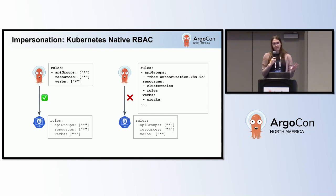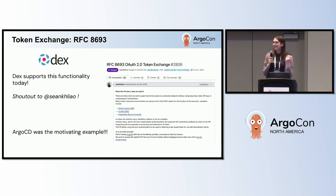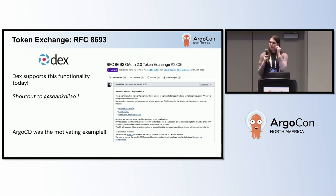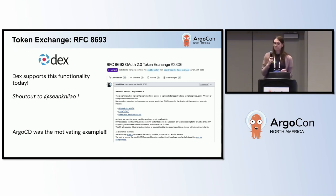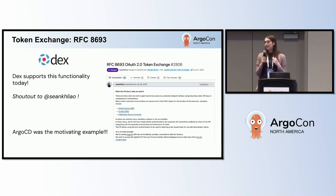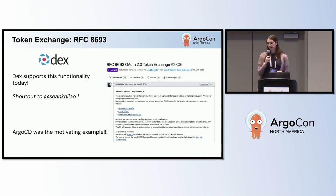So impersonation is number one. Number two is token exchange. Token exchange is an OIDC functionality for basically changing a token out for one that's trusted by or issued by a different source. If we're in a CI system like GitHub Actions or any other system that will issue us OIDC tokens, we might want to authenticate to Argo CD for accessing its API.